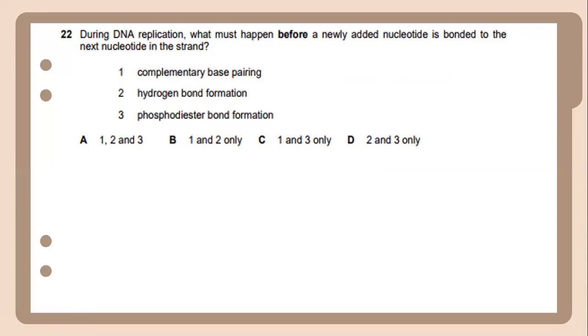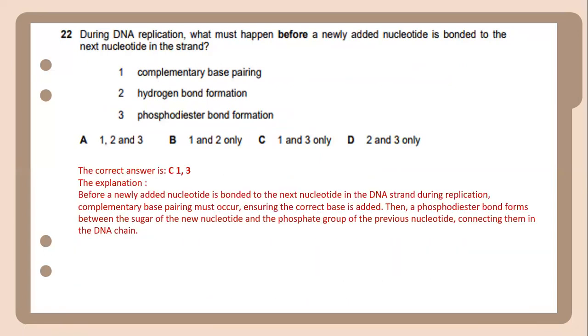Twenty-two. During DNA replication, what must happen before a newly added nucleotide is bonded to the next nucleotide in the strand? The answer is complementary base pairing and phosphodiester bond formation. Before a newly added nucleotide is bonded to the next nucleotide in the DNA strand during replication, complementary base pairing must occur to ensure the correct base is added. Then a phosphodiester bond forms between the sugar of the new nucleotide and the phosphate group of the previous nucleotide, connecting them in the DNA chain.